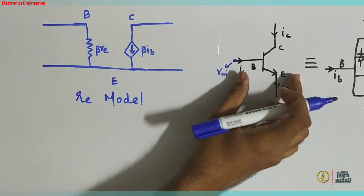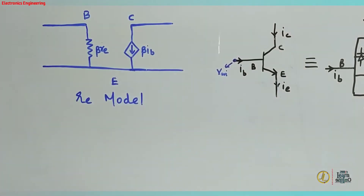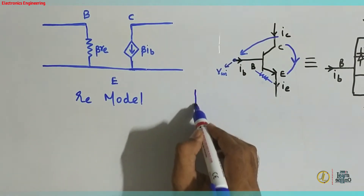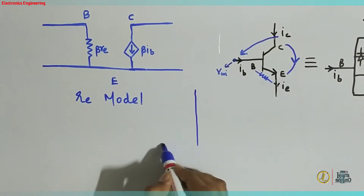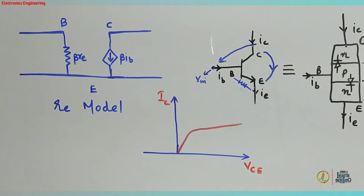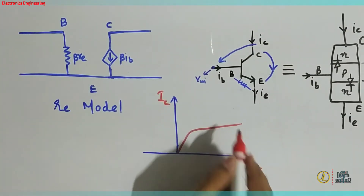This is the transistor program. This is UCM RE Models, UCR. If you do one thing, you can go to the output side. You can go to the output characteristics.